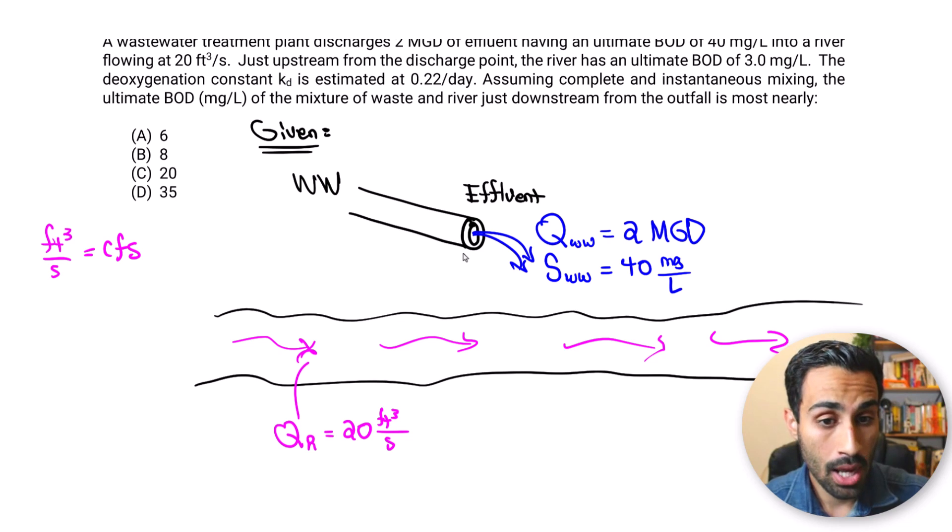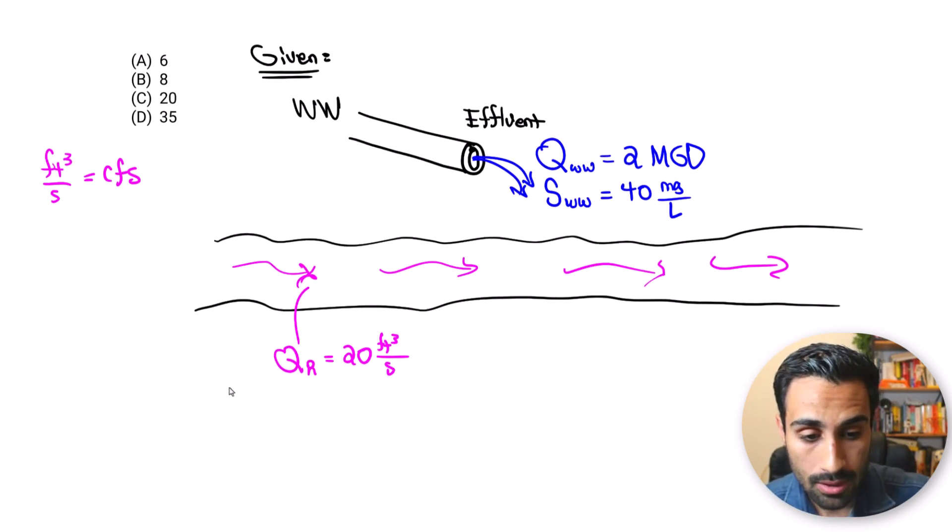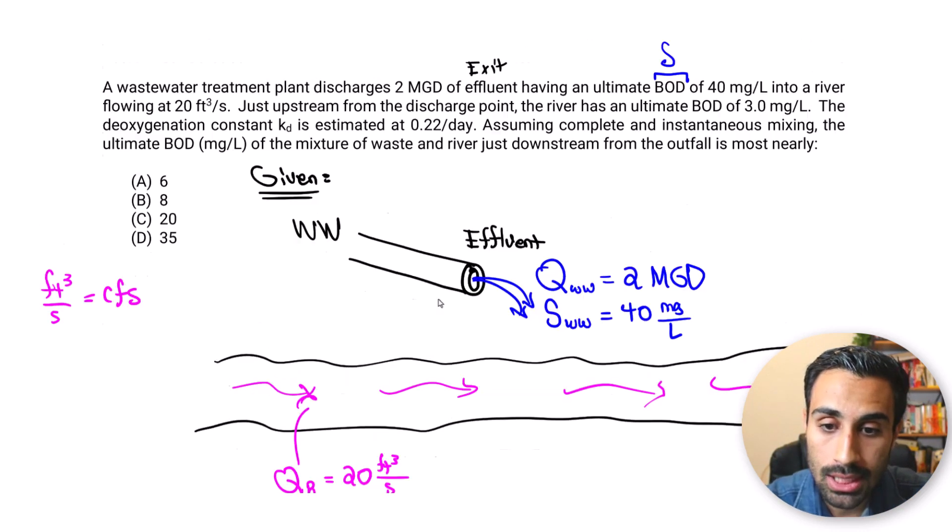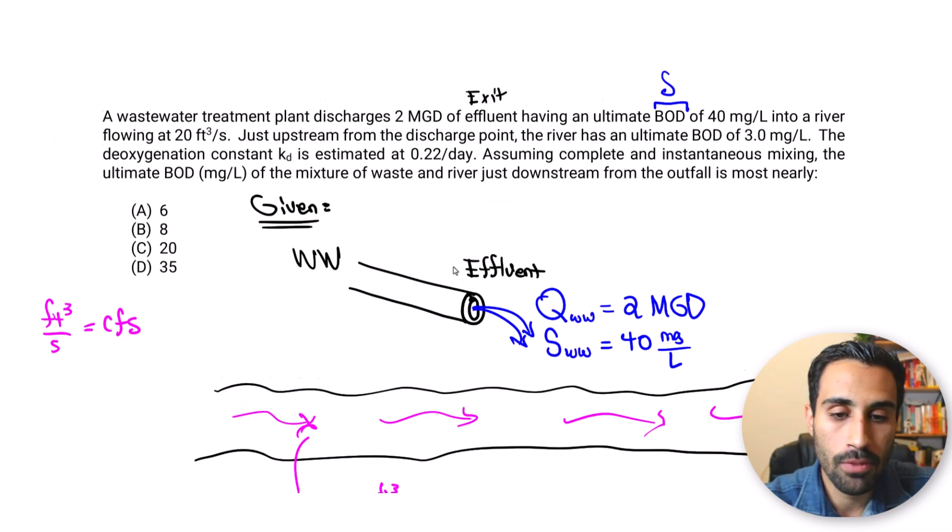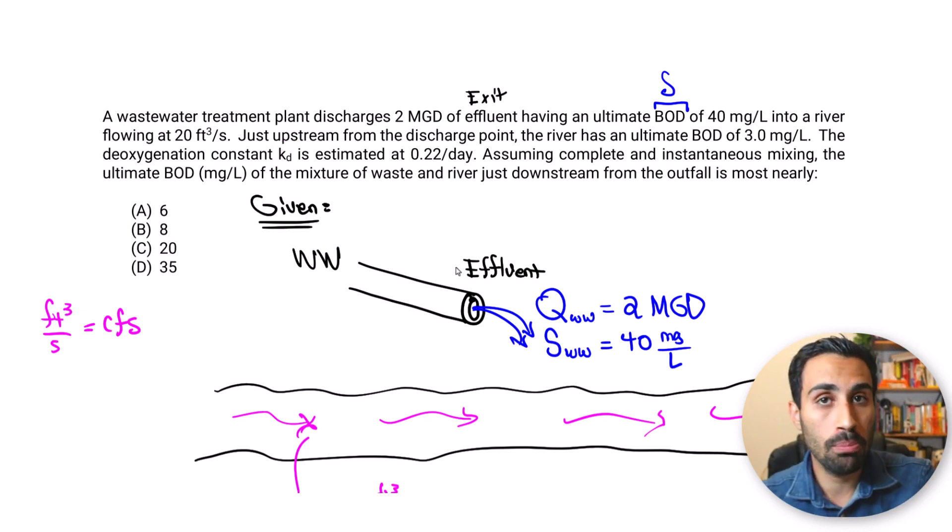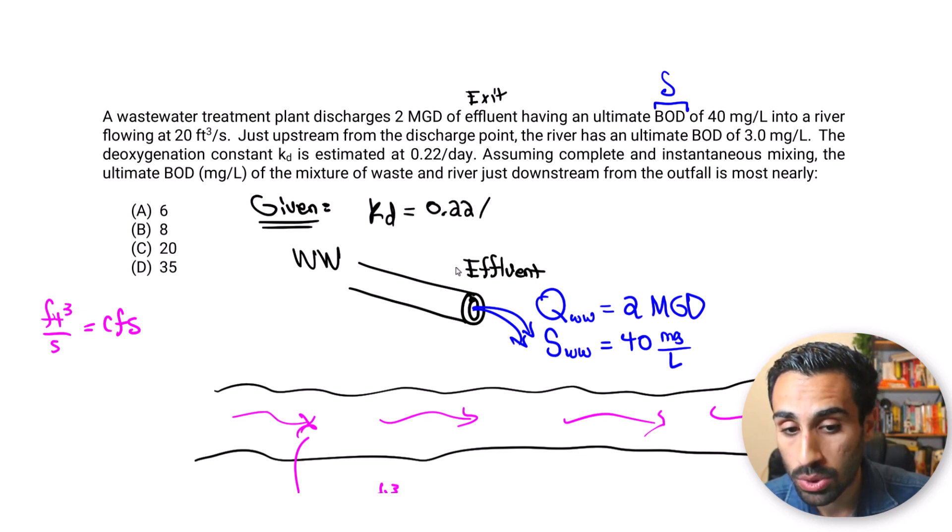Just upstream to the discharge point, the BOD in the river has an ultimate BOD of three milligram per liter. This is for the river. So just upstream that BOD right here is going to be the S for the river is three milligram per liter. Now the deoxygenation constant K sub D is estimated to be 0.22 per day. In this case we'll see why this is not important. Keep in mind we would use this for other types of problems using that formula in the handbook.